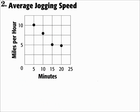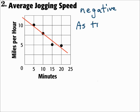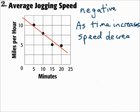Number two: average jogging speed. This compares miles per hour with minutes. You can see the way those points are lined up that you can draw a line of best fit. That line goes down left to right — that is a negative correlation. As time increases, speed in miles per hour decreases.